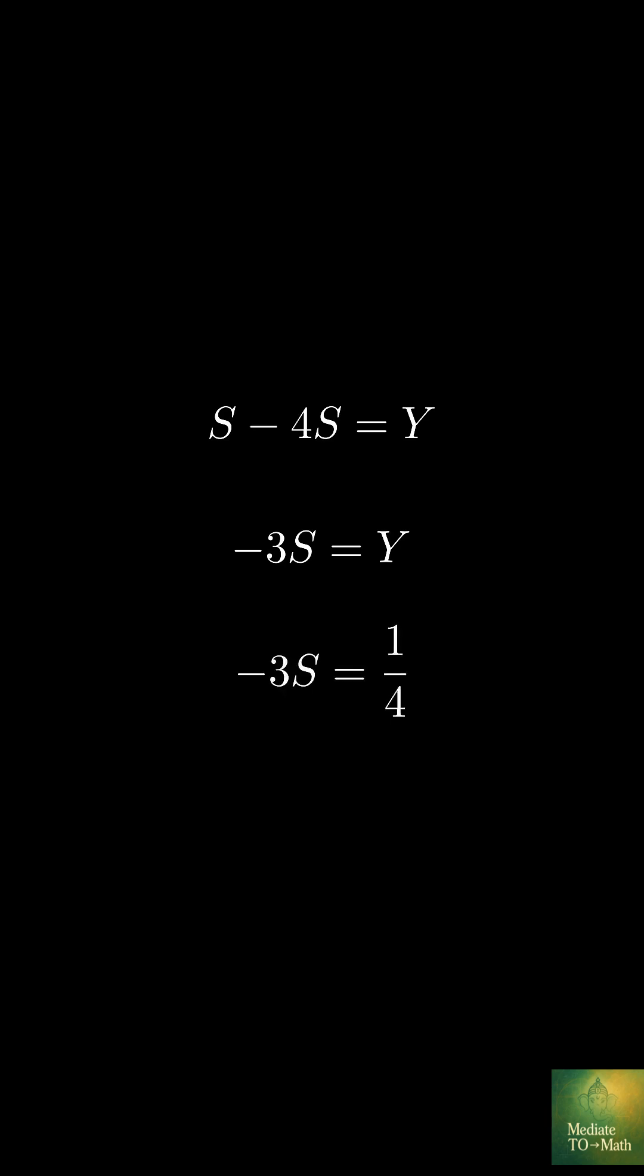We know that y equals 1 fourth. So negative 3s equals 1 fourth. Divide both sides by negative 3. And we get s equals negative 1 twelfth. That's the proof that 1 plus 2 plus 3 plus 4 all the way to infinity equals negative 1 twelfth.